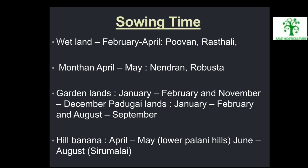Sowing Time: At wetland areas, Puvan and Rasthali variety of banana is grown in February and April. Manthan, Nendran, and Robashta variety of banana is grown in April and May. At garden lands, January and February, and November and December. At Paduguay lands, January, February, and August–September. In the hilly areas, Hilly banana is sown in April and May; Lower Palani hills in June–August; Siru Malai also has specified sowing periods.